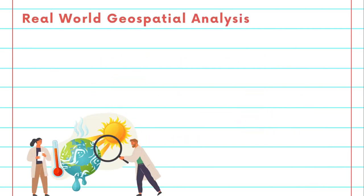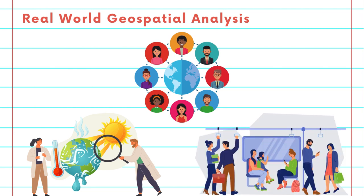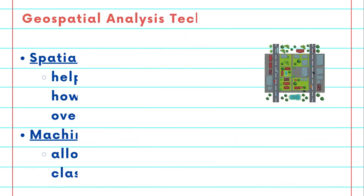Imagine predicting environmental changes and analyzing social network connections in physical space, or even optimizing transportation systems. These complex tasks require advanced analytical methods. We use spatial regression to understand how variables interact over space. Machine learning allows us to predict and classify geospatial data, offering insights into areas like urban development and agricultural planning.